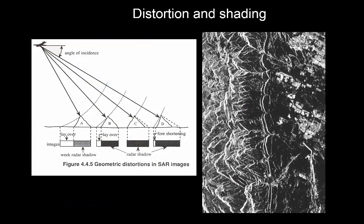Radar imagery is not easy to work with, and that's one of the reasons why we're not actually going to work with radar imagery in this course. There are a lot of issues — not only to do with noise, the double bounce effect, and surface roughness effects, but also geometric distortions. Those arise because we're collecting data at an angle and basically measuring how long it takes for the signal to come back, from which we infer the distance to the object and try to construct an image.